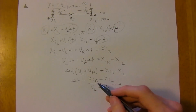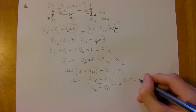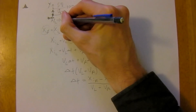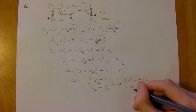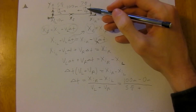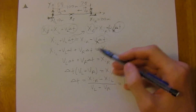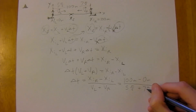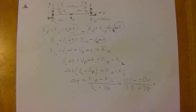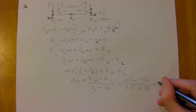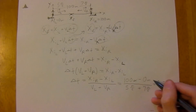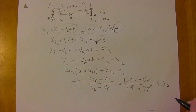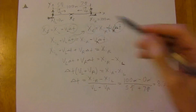Plugging in the values: x_initial_right is 100 meters, x_initial_left is 0 meters, v_left is 5 m/s, and v_right is 7 m/s (we already accounted for the negative sign algebraically). So Δt = 100 / (5 + 7) = 100 / 12 ≈ 8.3 seconds. The meters cancel, leaving units of seconds. The wizards collide after 8.3 seconds.